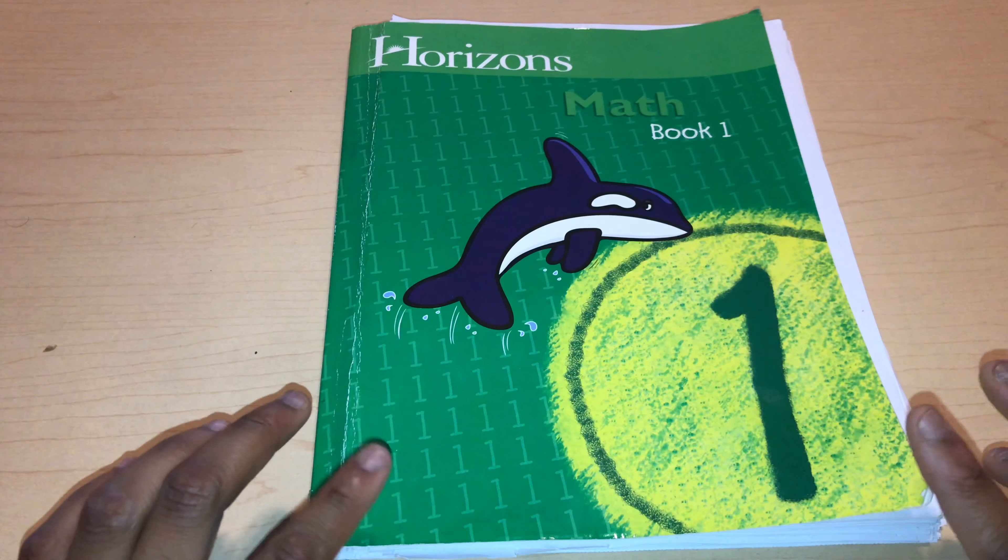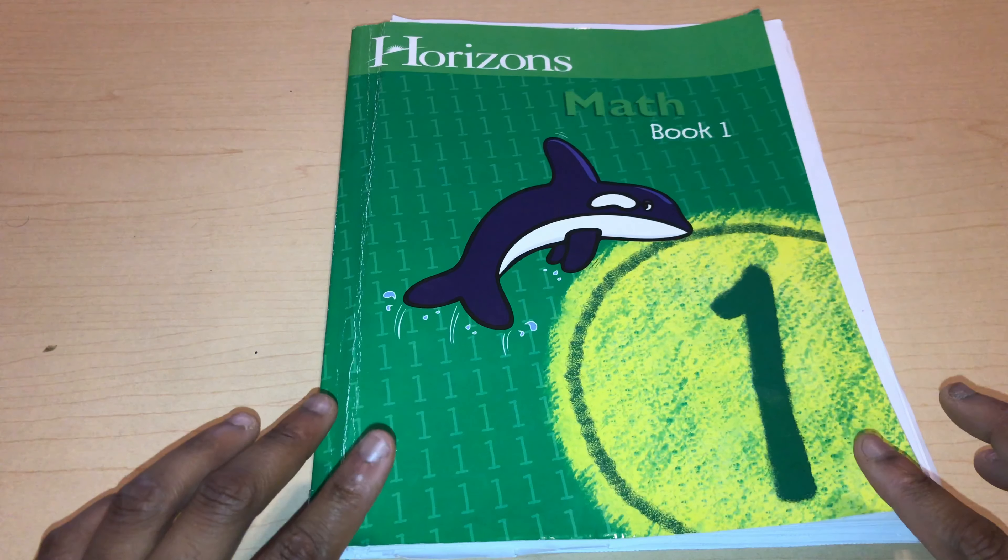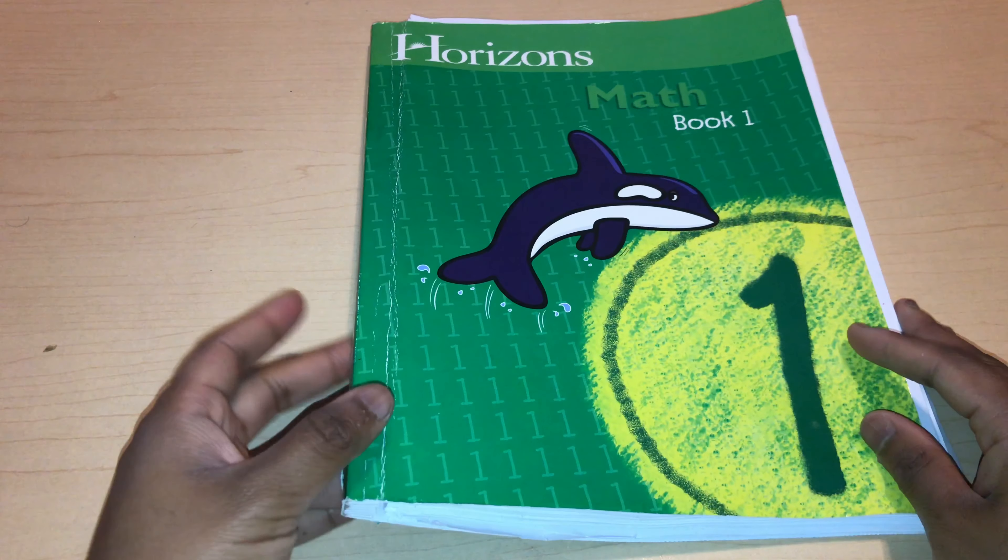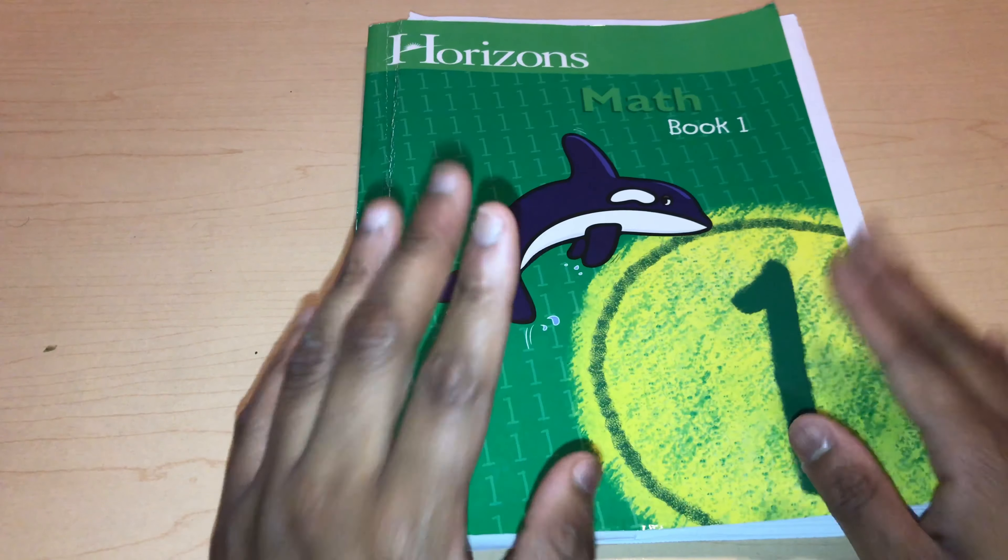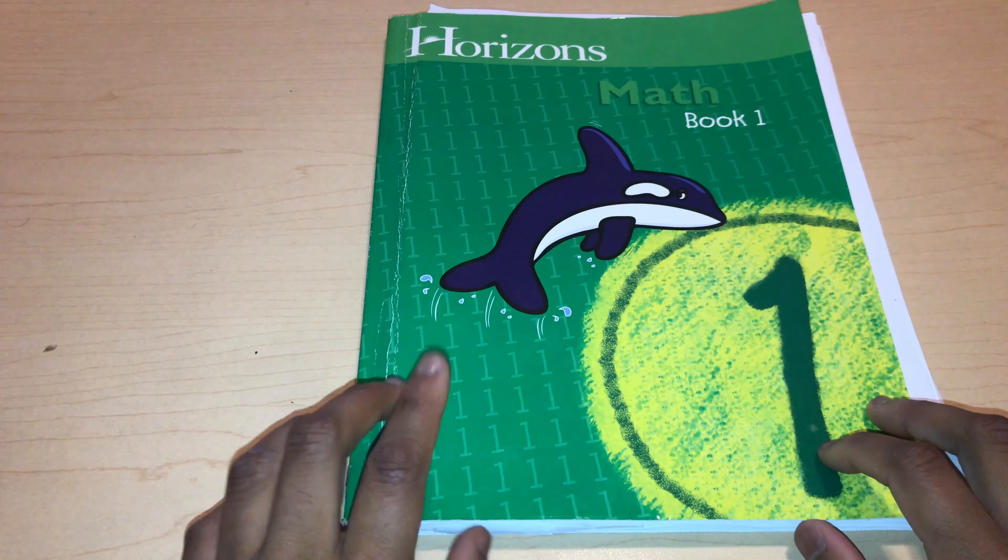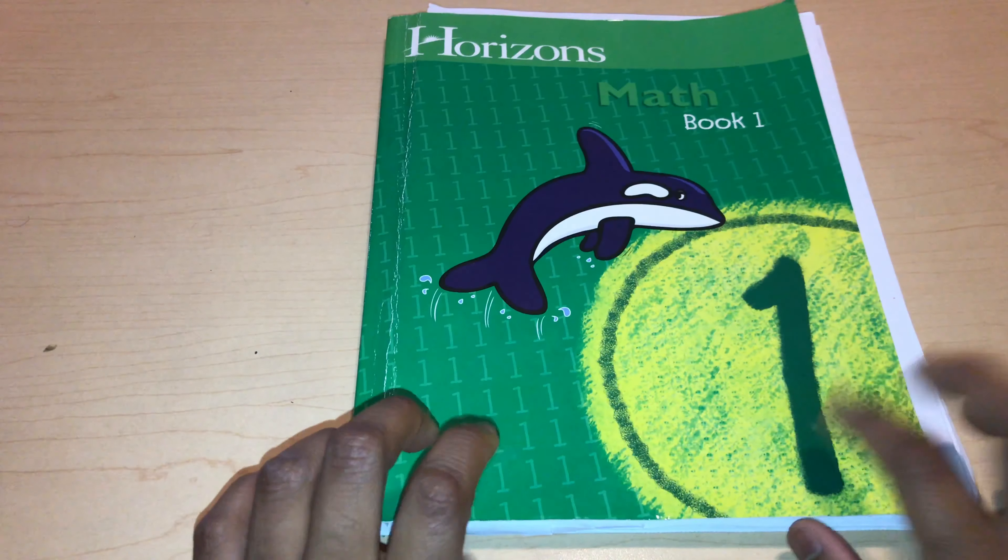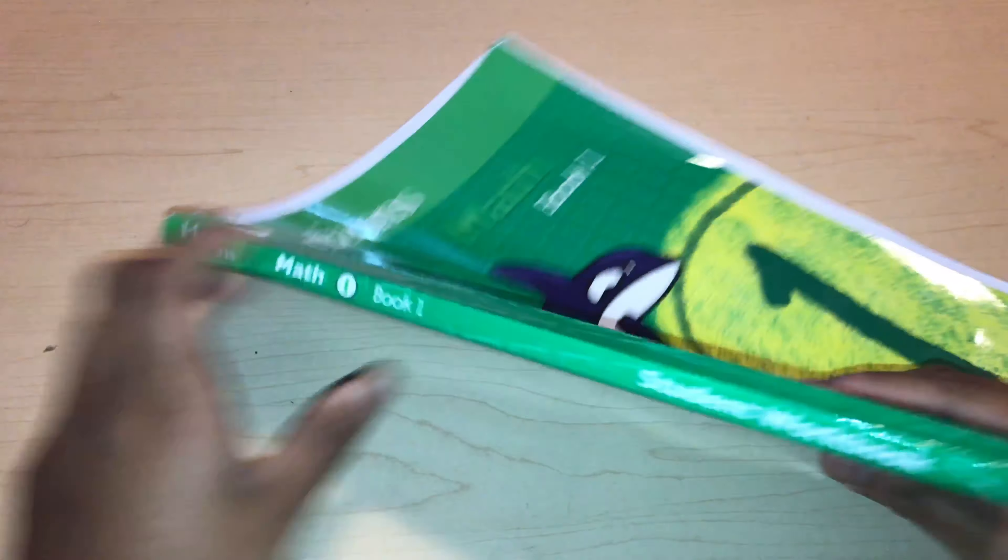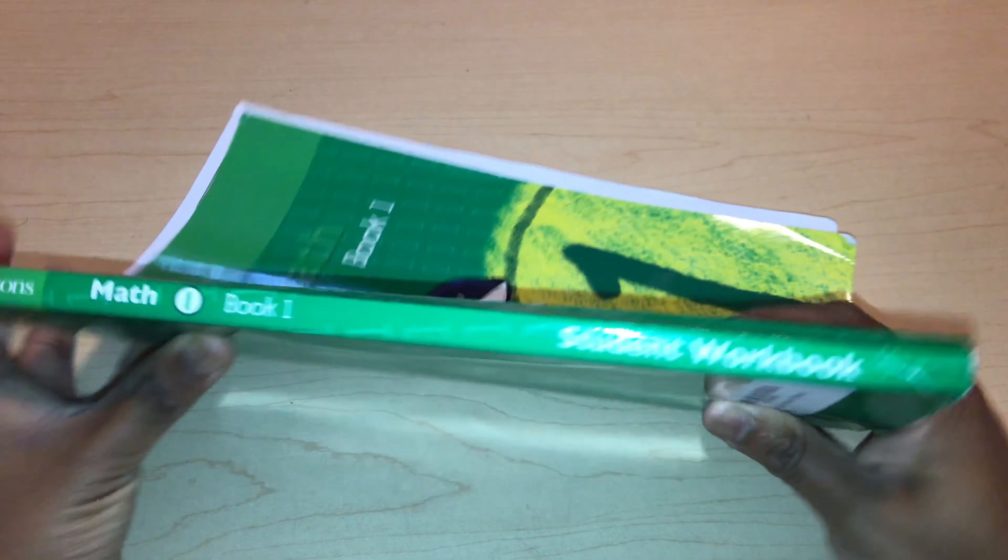Horizon is a spiral curriculum which goes back and forth from different topics in math. This is a two-part curriculum. So it has two workbooks, book one and book two for each grade. This is the student workbook, as you see it right there. From Life Pack, Horizon book one.